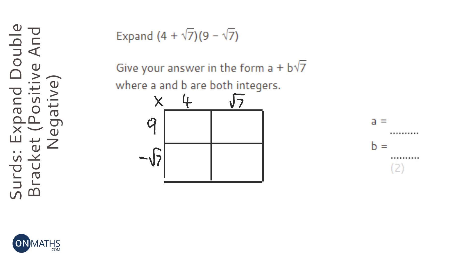4 times 9 is 36. 9 times root 7 is 9 root 7. 4 times minus root 7 is minus 4 root 7. And root 7 times minus root 7.